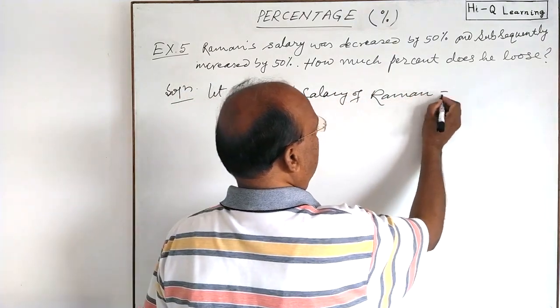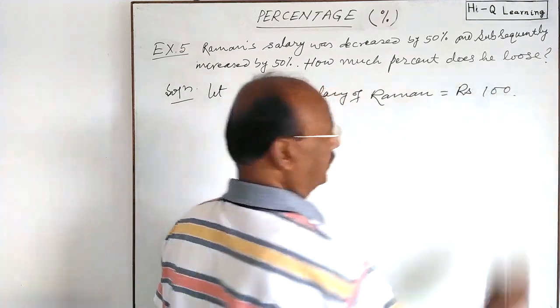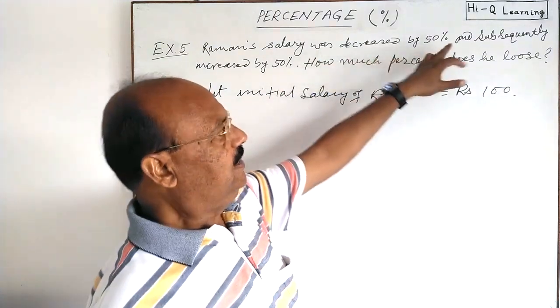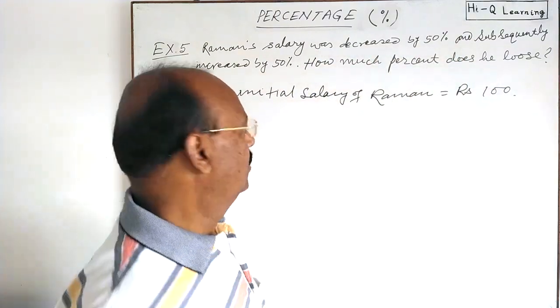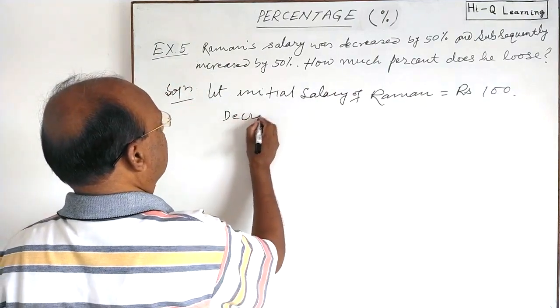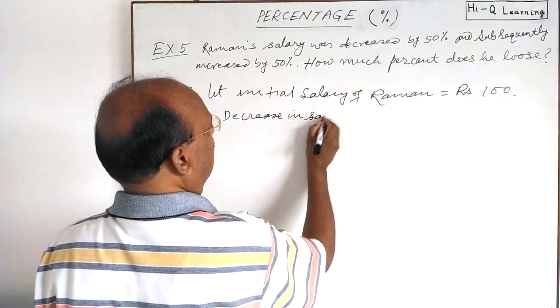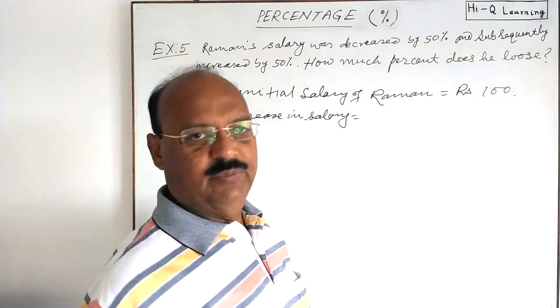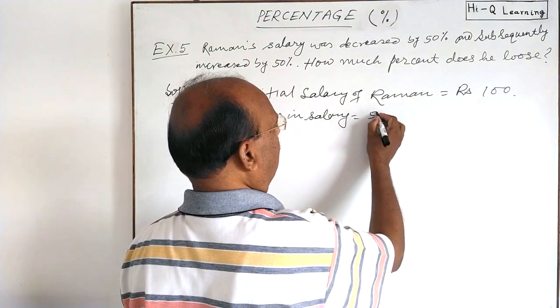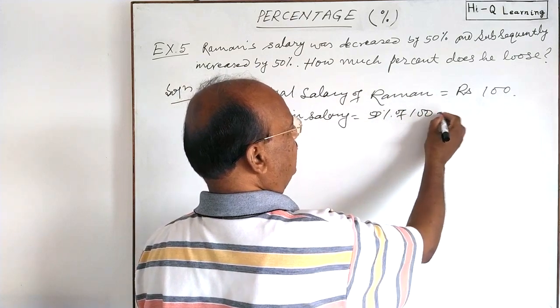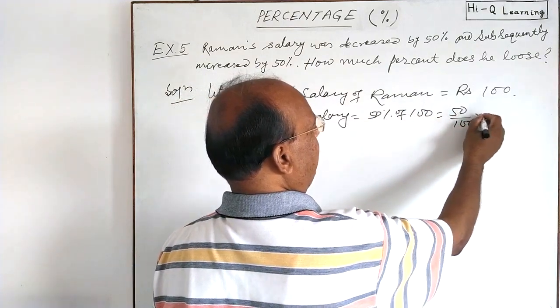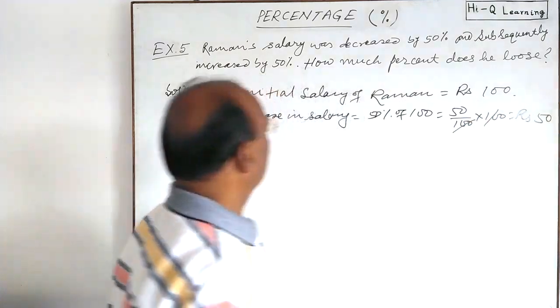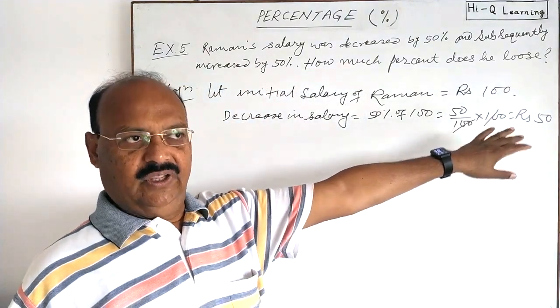So let us suppose that initial salary of Raman is rupees 100. Then calculation becomes very simple. And it decreases by 50 percent, so decrease in salary: 50 percent of 100. Very simple, simply 50. How? 50 percent of 100 means 50 divided by 100 into 100. This is equal to rupees 50. This is decrease in salary.